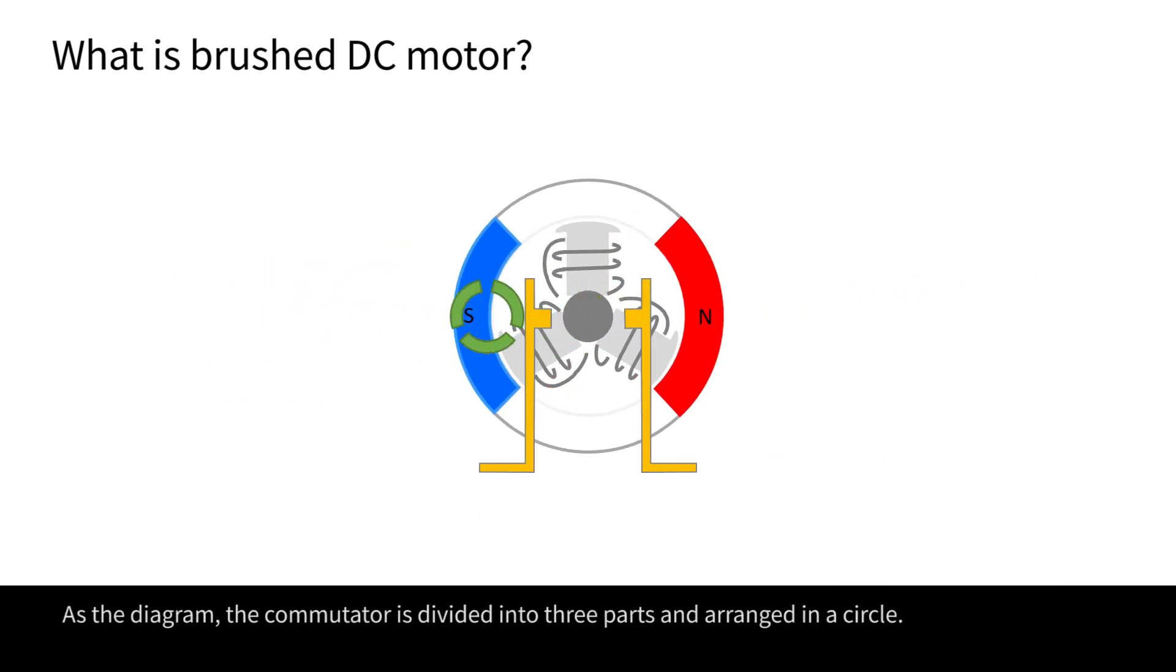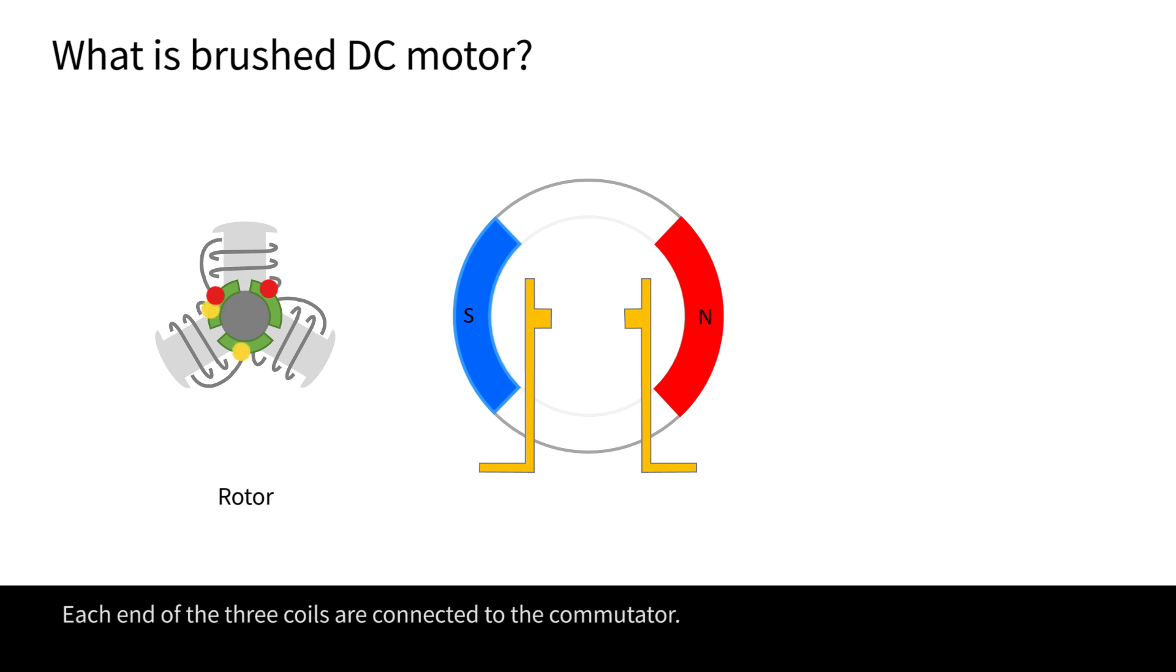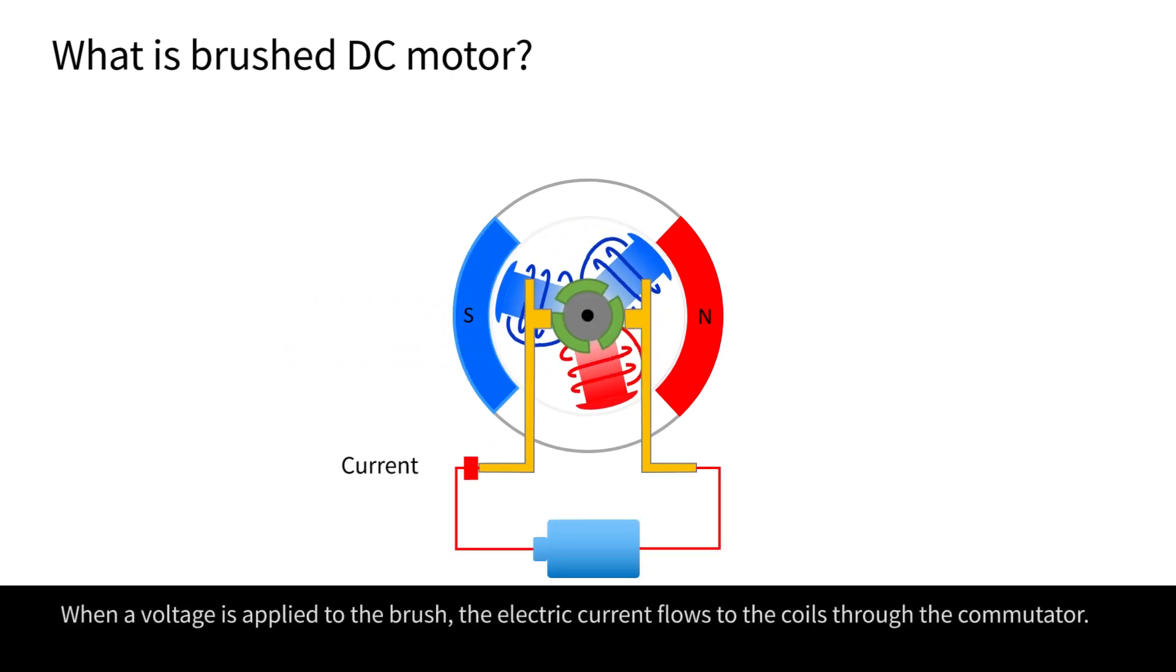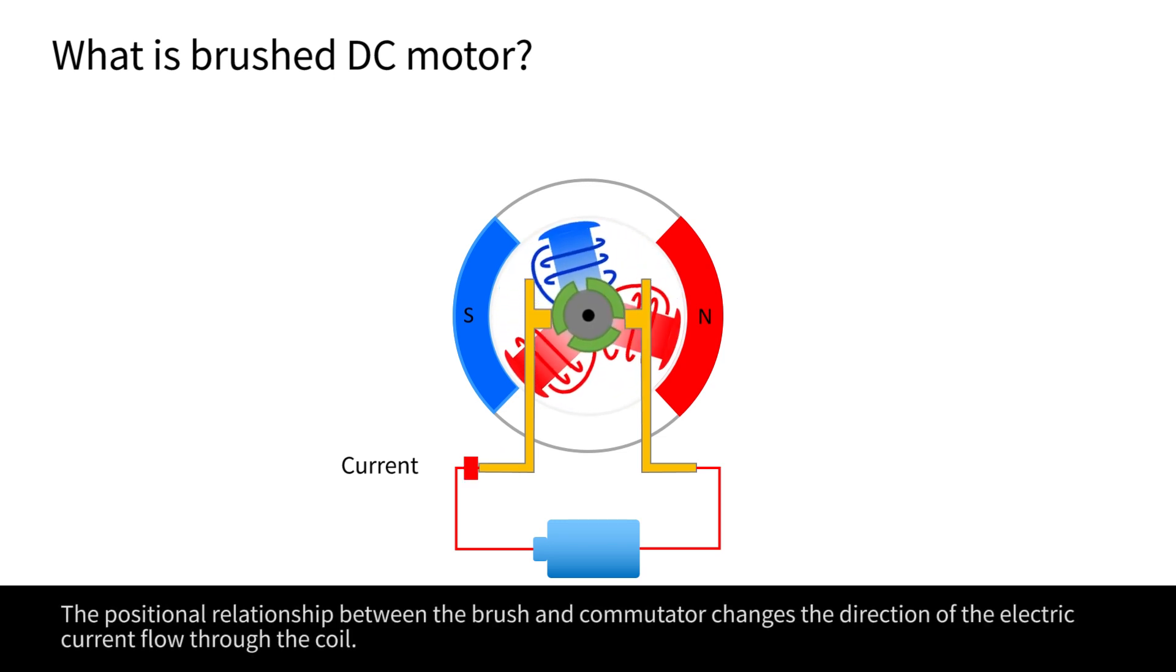As the diagram, the commutator is divided into three parts and arranged in a circle. Each end of the three coils are connected to the commutator. When a voltage is applied to the brush, the electric current flows to the coils through the commutator. The positional relationship between the brush and commutator changes the direction of the electric current flow through the coil.